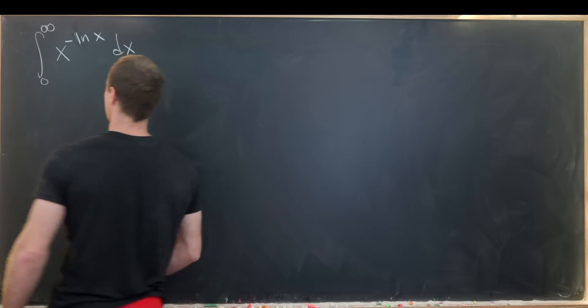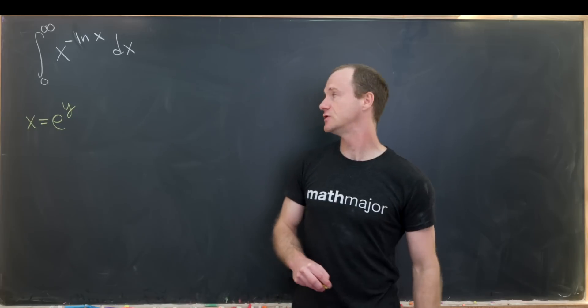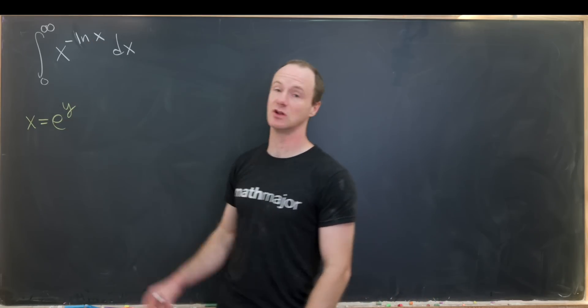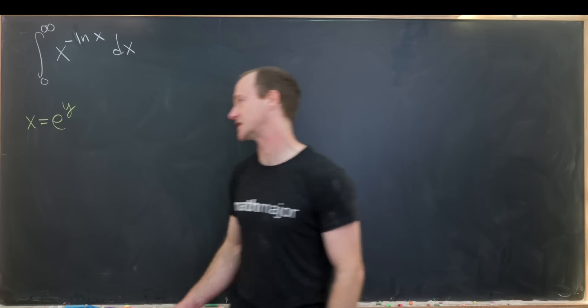So let's start by setting x equal to e to the y. And that substitution pops out because notice we've got the natural log of x here. So if we take the natural log of e to the y, we'll just get y.